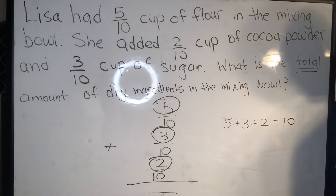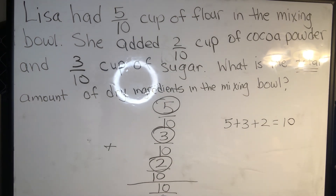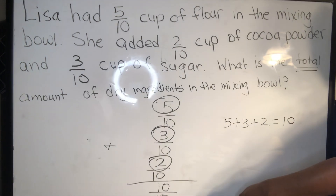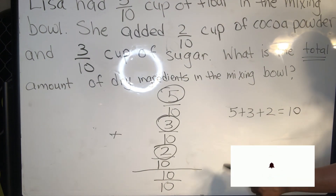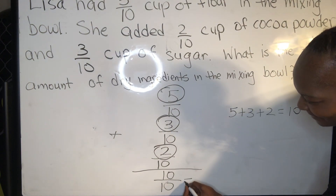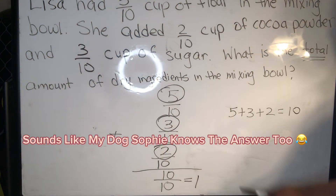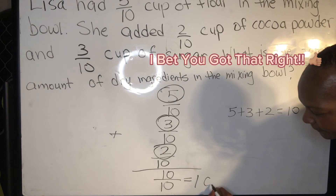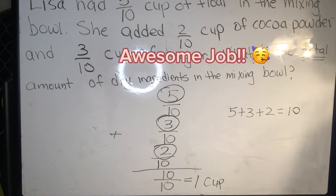We have ten here, so we put that ten over top of our ten. Guys, same number shaded as our total — same numerator, same denominator. So what does that equal? One! We have ten total parts, we have ten shaded parts, and it equals a whole one. That means we have one full cup of dry ingredients in the mixing bowl. That is the answer.